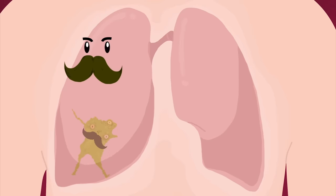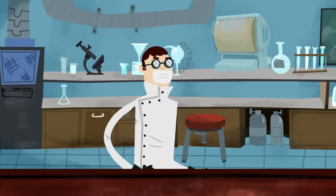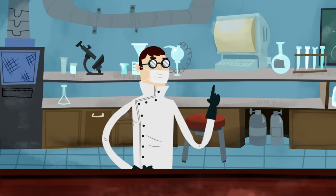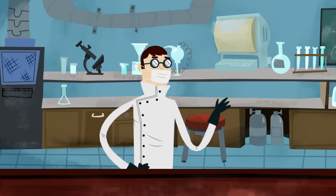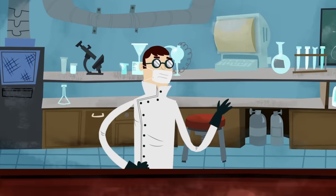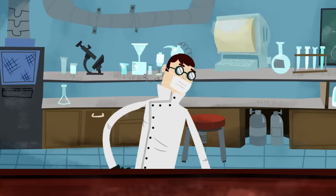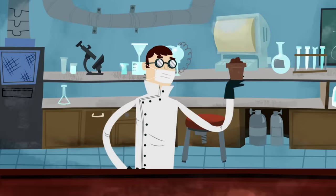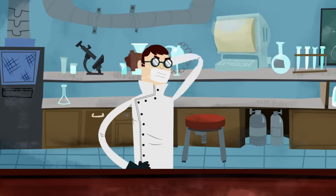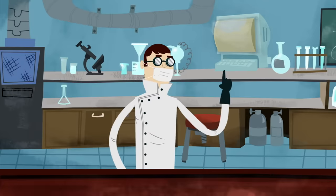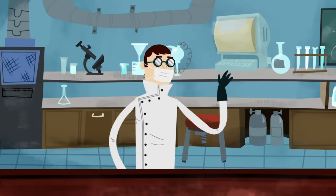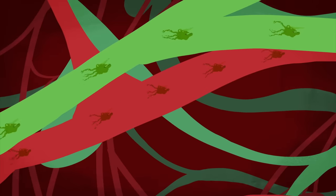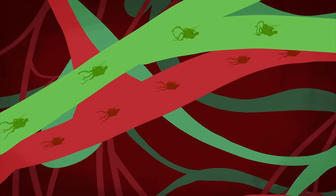However, James Ewing, the first professor of pathology at Cornell University, challenged the seed and soil theory and proposed that the site of metastasis was determined by the location of the vascular and lymphatic channels which drain the primary tumor.